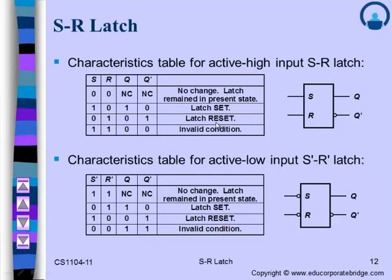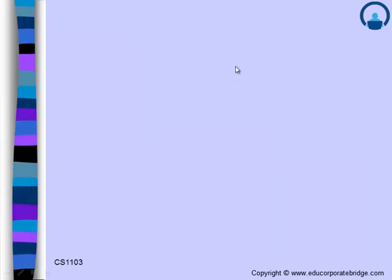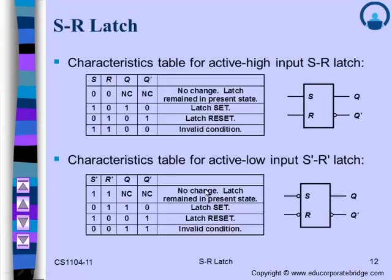Now let's consider the active low input SR latch, also called the SR latch using NAND gates. The previous active high SR latch used NOR gates; this one uses NAND gates. Working out the truth table: when both inputs are 0, the output Q and Q-bar are both 1. Since Q and its complement can never be the same, for the SR NAND latch (active low input), the condition S-bar=0, R-bar=0 — when both inputs are 0 — is the invalid state.